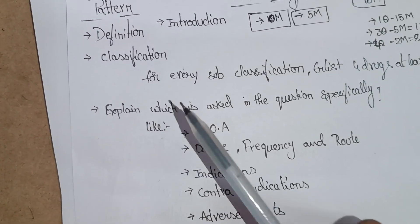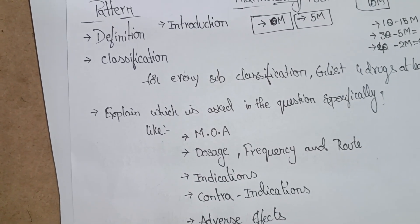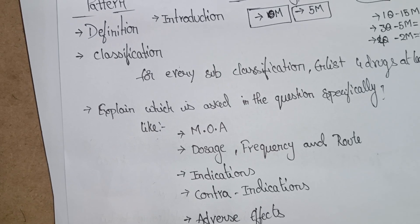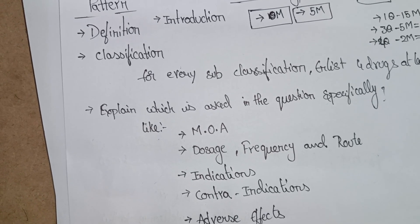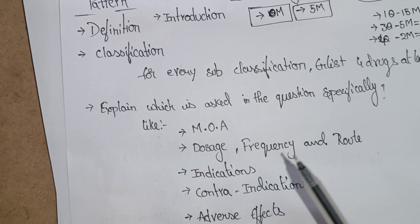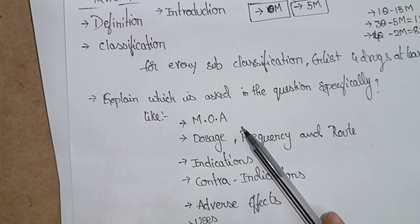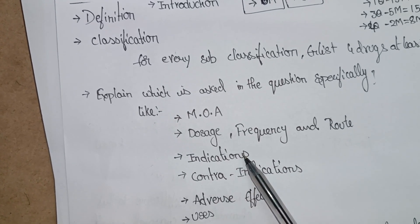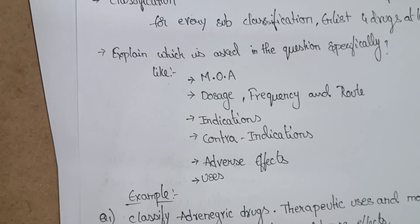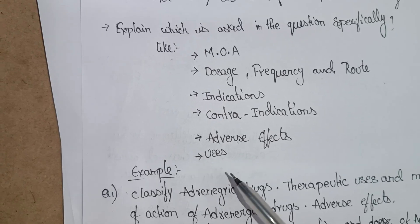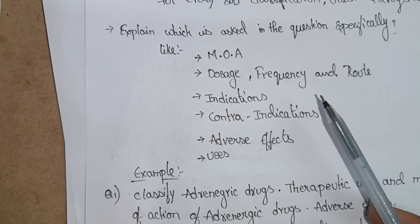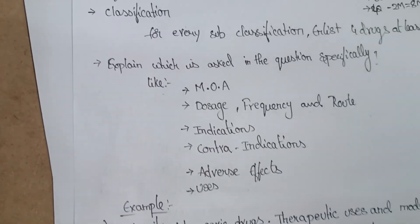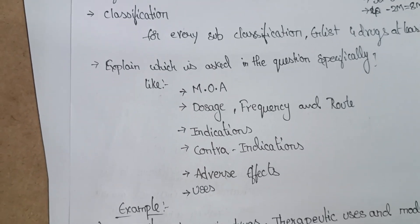We need to explain what they specifically asked for in the question. If they are asking about any drug specifically, we need to write according to the question — mode of action of the drug, doses, frequency and route, indications, contraindications, adverse effects. At the end we'll write uses; uses can be written after the doses or at the end — it depends on your choice.